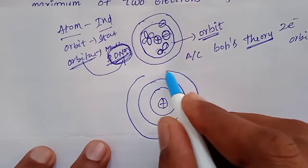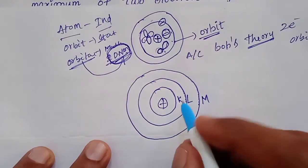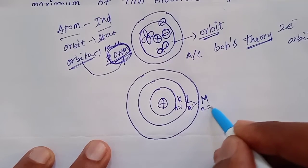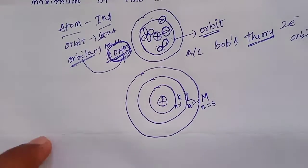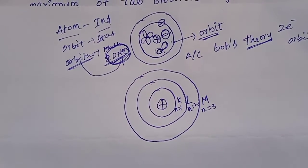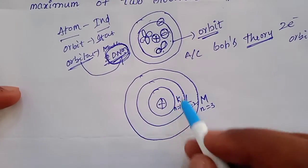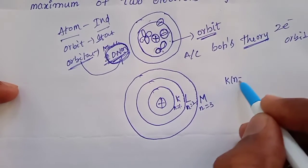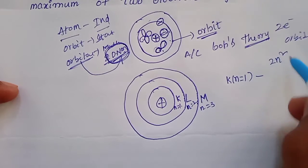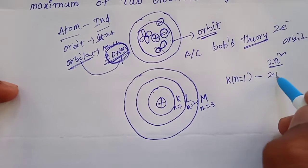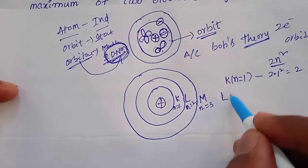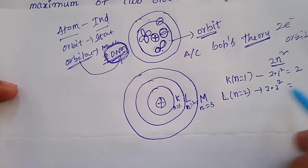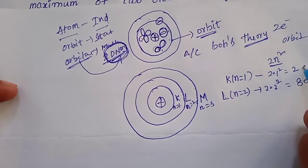This is orbit K, orbit L, orbit M — each with specific numbering where n equals 1, 2, 3. So for n=1 (K shell), maximum electrons = 2×1² = 2. For n=2 (L shell), maximum = 2×2² = 8 electrons.